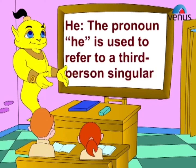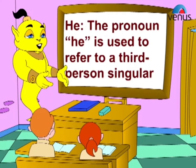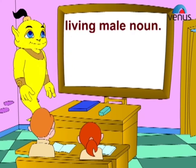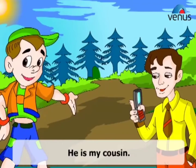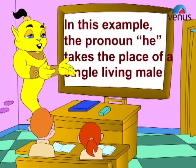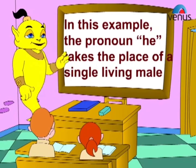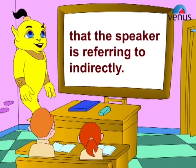The pronoun 'he' is used to refer to a third-person singular living male noun. Example: He is my cousin. In this example, the pronoun 'he' takes the place of a single living male that the speaker is referring to indirectly.